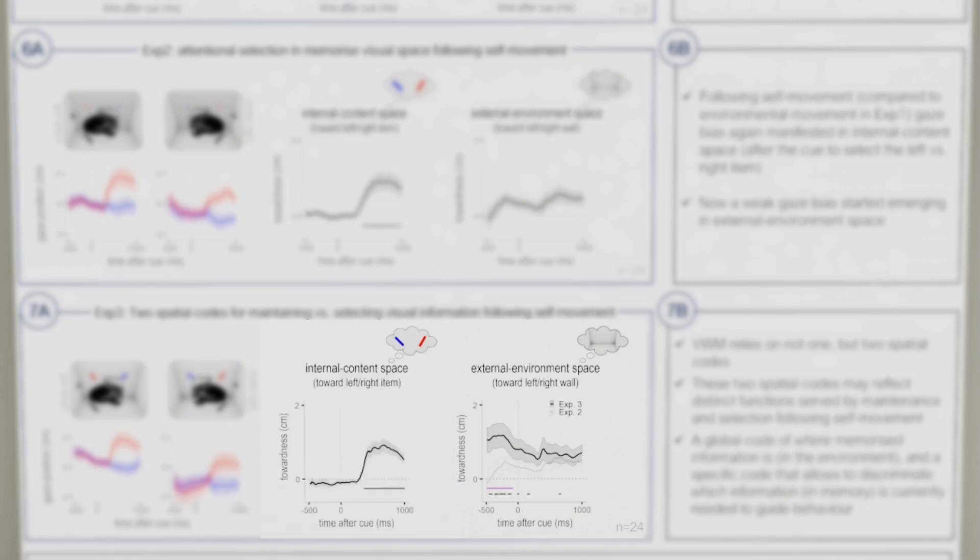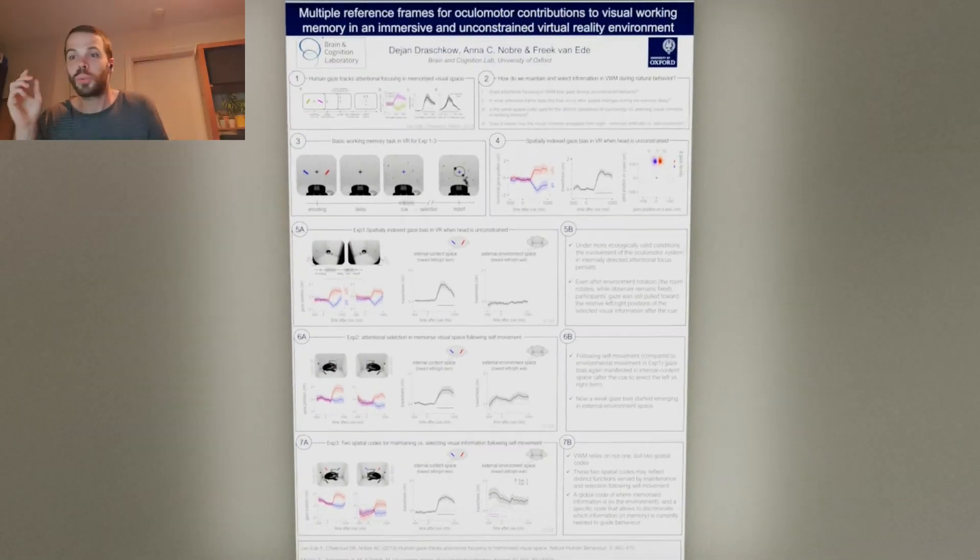The timing of these two gaze biases was distinct. The bias in the external environment space was particularly pronounced prior to the selection cue, during the maintenance of both visual items in working memory. So we suggest that immersive working memory relies on two distinct spatial codes supporting maintenance versus selection.